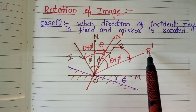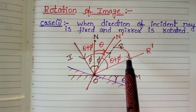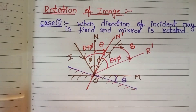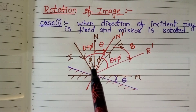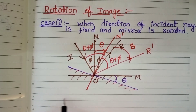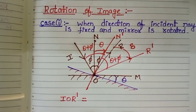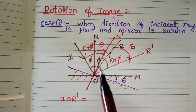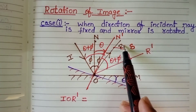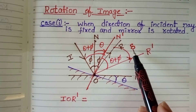The reflected ray changes its position. Now, we want to find out the angle of rotation of the reflected ray. Let the angle of rotation of the reflected ray be delta. By using this diagram, let us find out angle I O R dash. Carefully observe the diagram: angle I O N is phi, angle N O R is also phi, and from R to R dash the angle is delta.